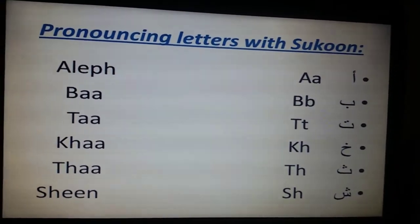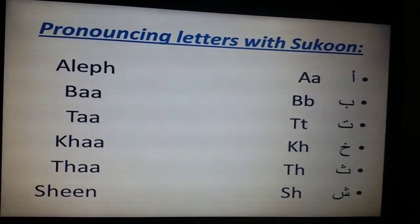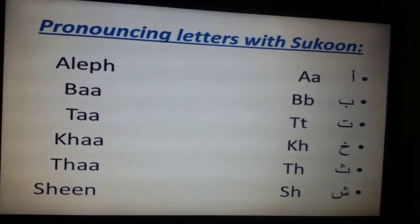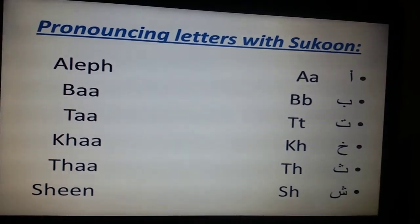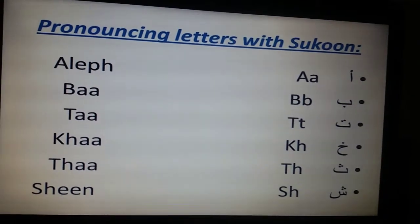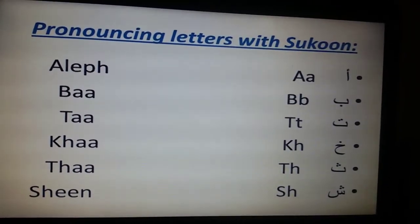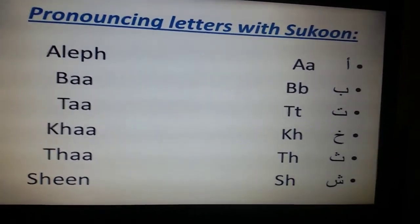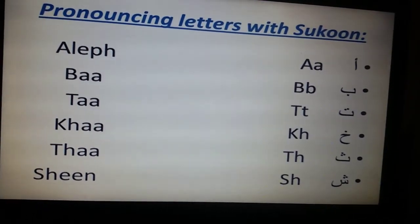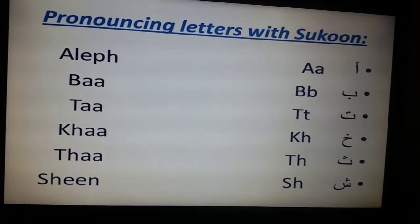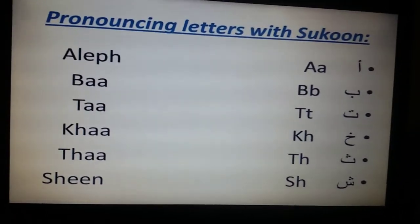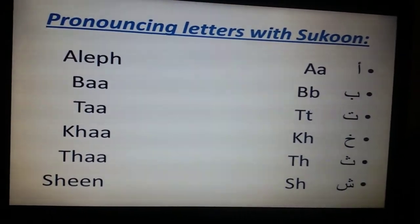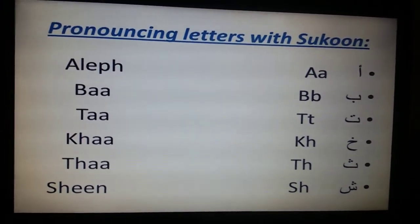Like the first three examples here: alif, ba, and ta. We take the first letter — 'a' as in alif — so it becomes 'a'. And 'ba' in the second example becomes 'b', and 'ta' becomes 't'. What we did is we took the first letter — a, b, t — and pressed on it as if we are pronouncing it twice. The third, fourth, and fifth examples: we took the first two letters, like 'sad', 'dad', and 'sheen', and pressed on them.